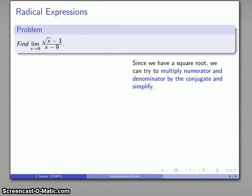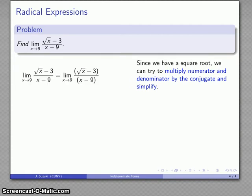So this time, because we have a square root, we might try to multiply numerator and denominator by the conjugate and simplify. So remember, the radical conjugate just consists of the same terms with the operator change. So if it was subtract, it becomes plus. So I'm going to multiply by the square root conjugate and simplify the expression.